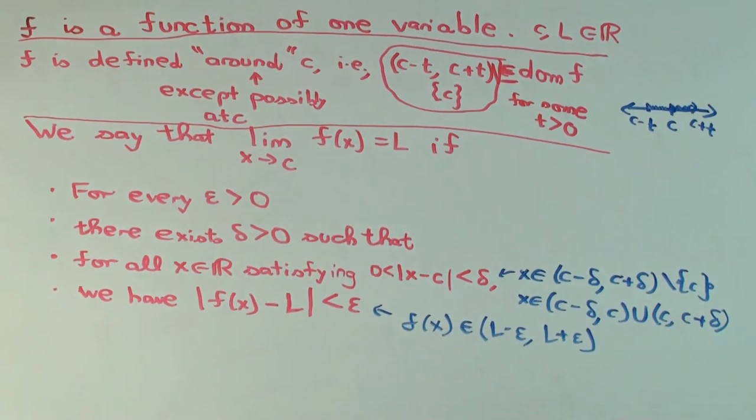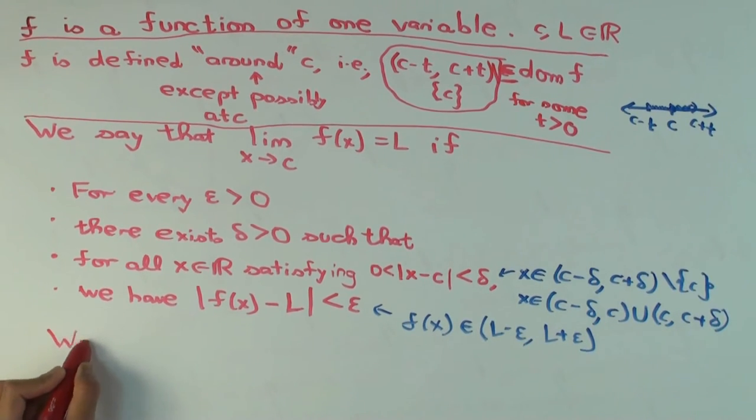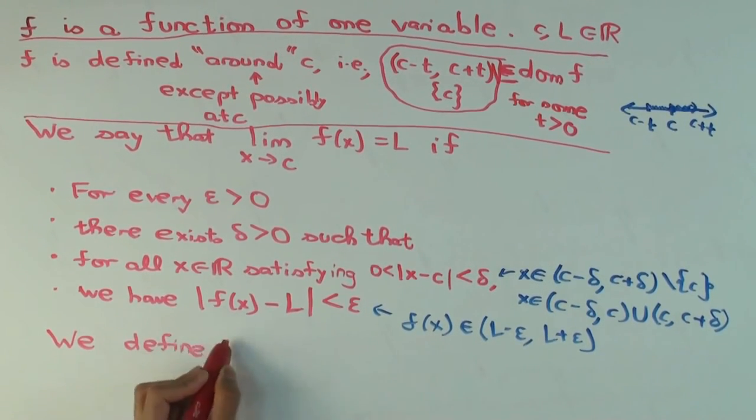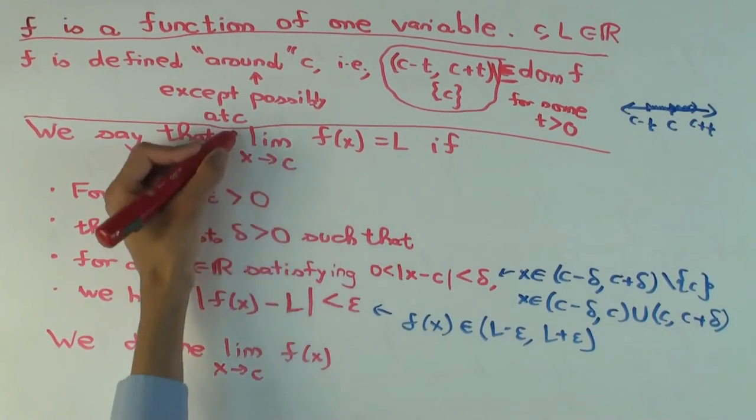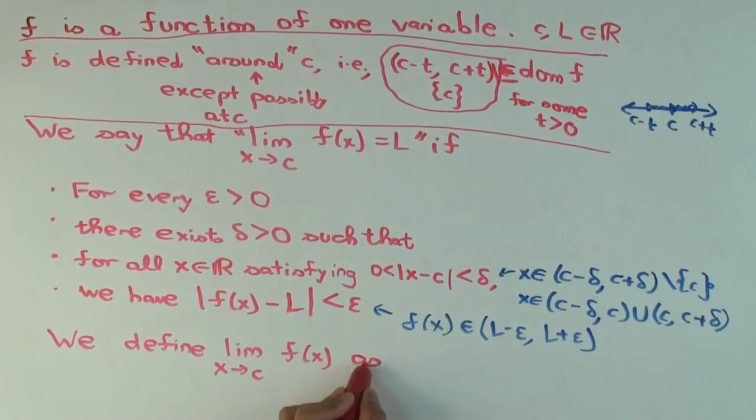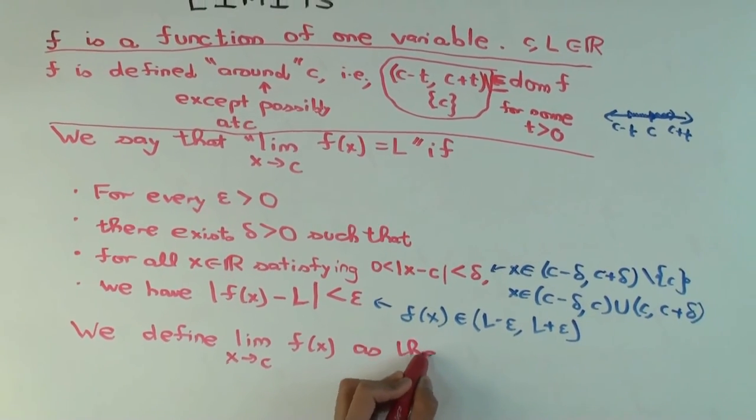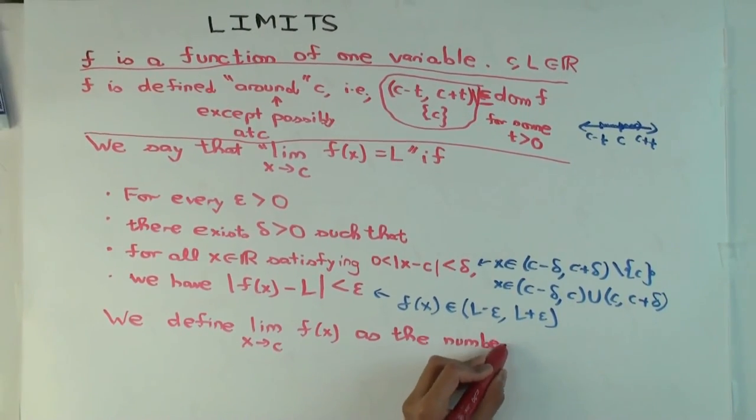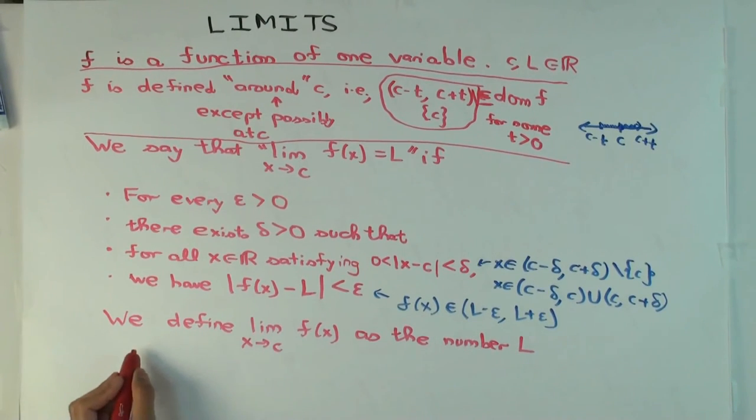Now how do we define the limit? Well, it's the number L for which the above holds. This should be equals, if it exists. If a number L exists for which this is true.